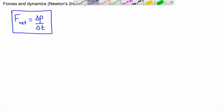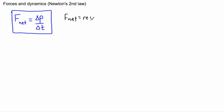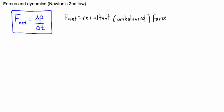F_net is the resultant or unbalanced force. We have to add up all the different forces acting on an object, and if there's an unbalanced force then we have a net force. This net force is measured in newtons, or kilogram meters per second squared.